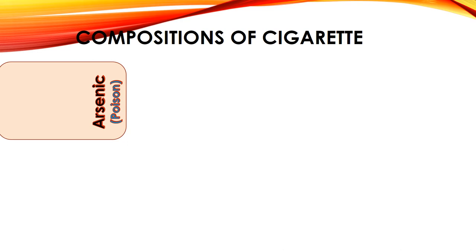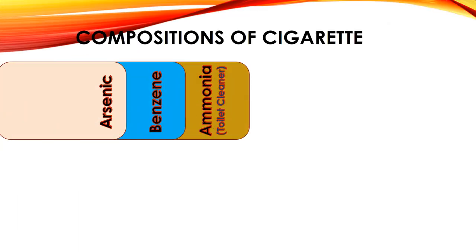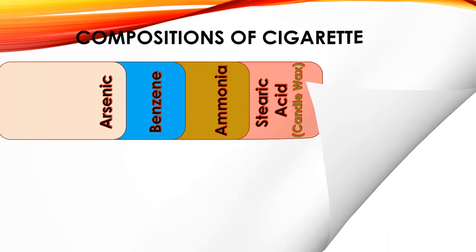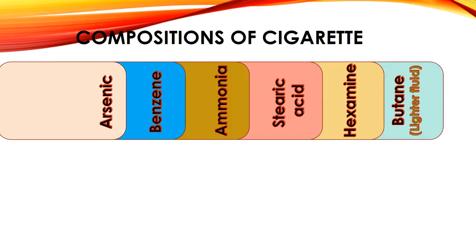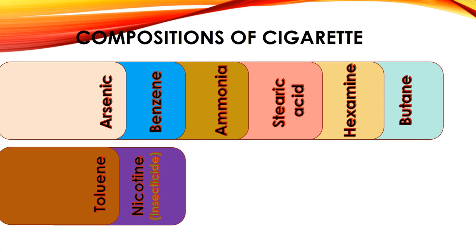Arsenic is poison. Benzene — petrol fumes. Ammonia — toilet cleaner. Stearic acid — candle wax. Hexamine — barbecue lighter. Butane — lighter fluid. Toluene — industrial solvent. Nicotine — insecticide.